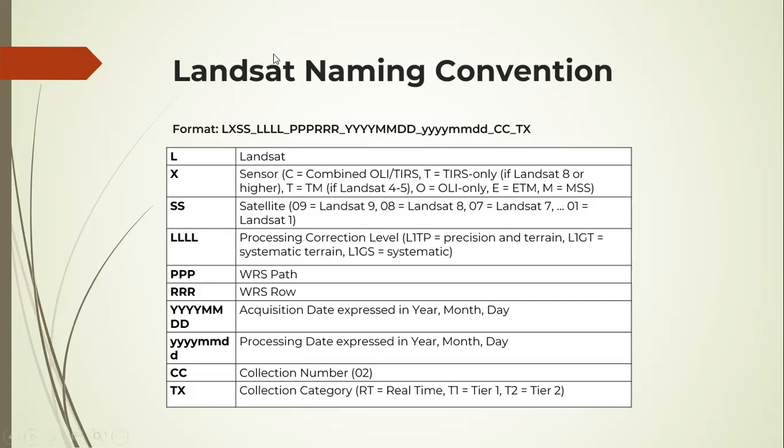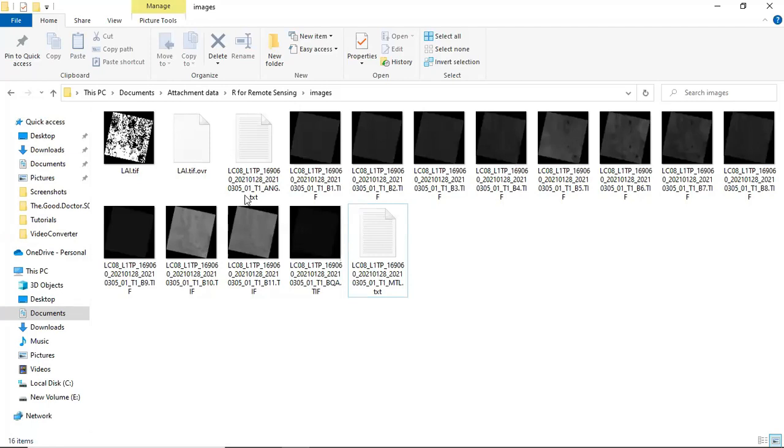When you get your Landsat image, images will look like this. You'll get a folder with very many images, that is from band 1 to band 11. You notice that it has a very long name. Those figures there inside the name have meanings, which we will look at.